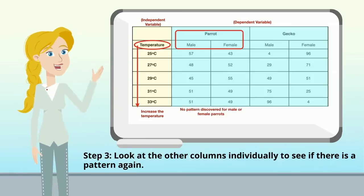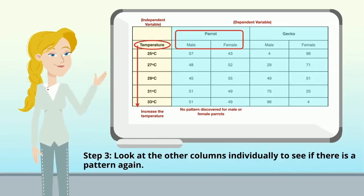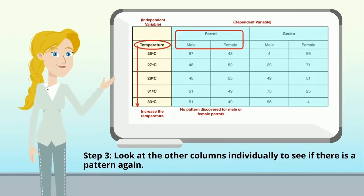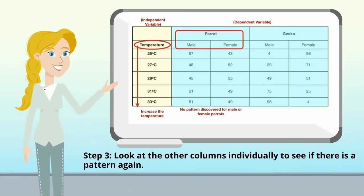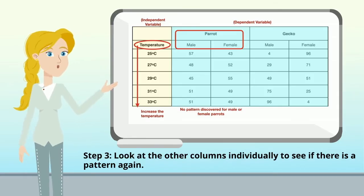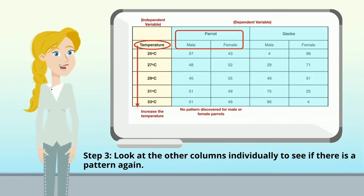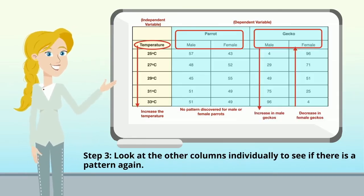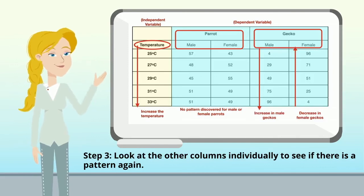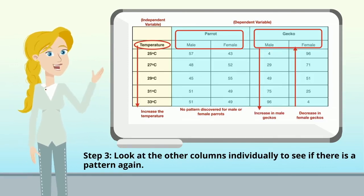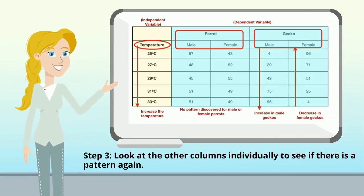In step three, we look at the other columns individually to see if there's a pattern. Looking at the parrots — male and female — there really is no pattern; they're about the same. However, looking at the geckos — male and female — we can see that the males are increasing and the females are decreasing.